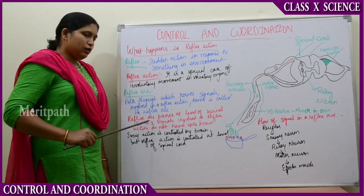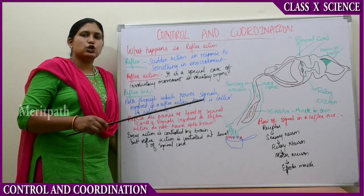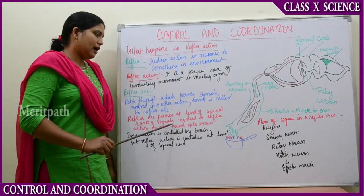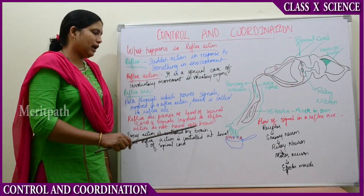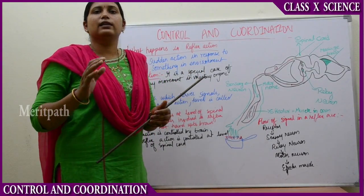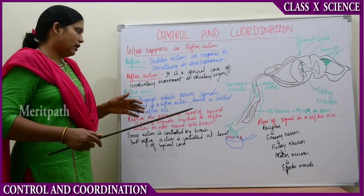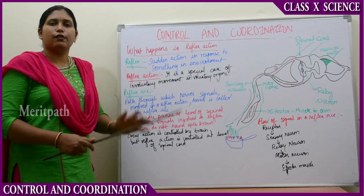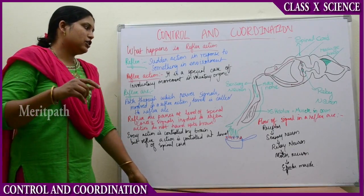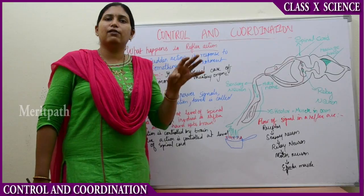The reflex arc passes at the level of the spinal cord. There is a nerve bundle at the spinal cord to which all receptor cells are connected by nerves. The reflex arc passes at the level of the spinal cord, and signals involved in this reflex do not travel to the brain. Because the brain is not much developed in animals, all reflex actions are carried out at the level of the spinal cord. The spinal cord receives the signals and transfers the nerve impulse. Every action is controlled by the brain, but reflex action is controlled by the spinal cord.